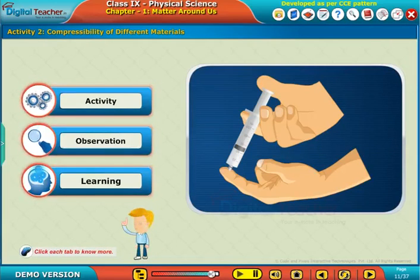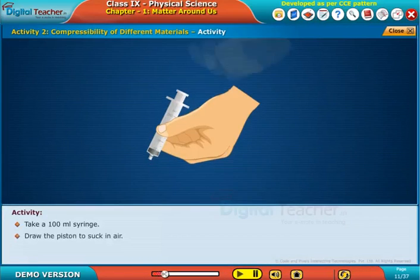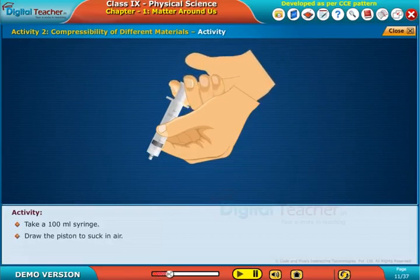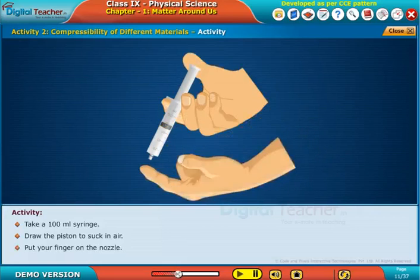Click each tab to know more. Take a 100 ml syringe, draw the piston to suck in air. Put your finger on the nozzle.